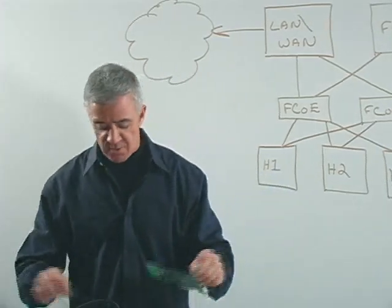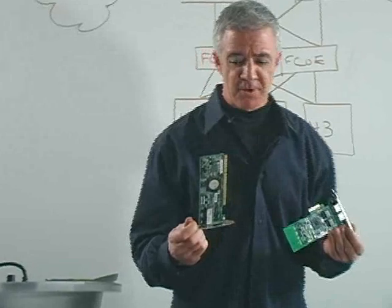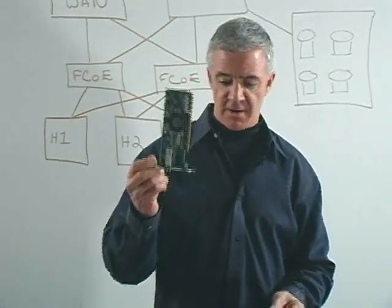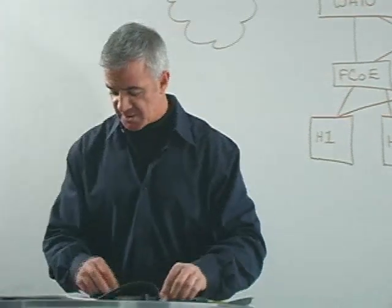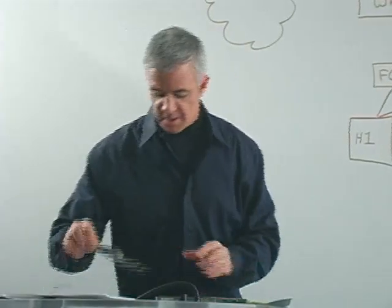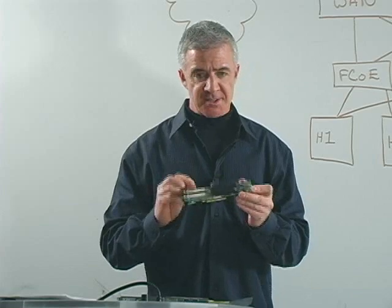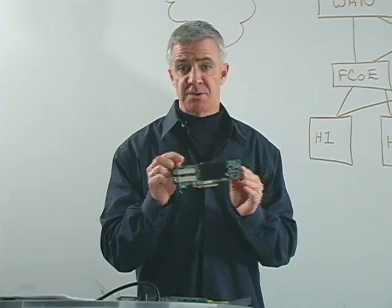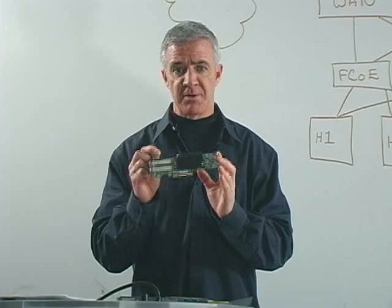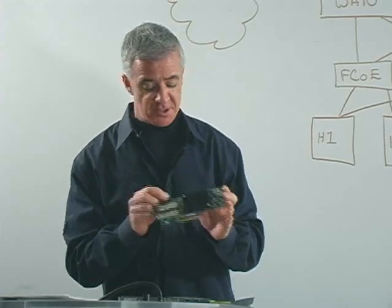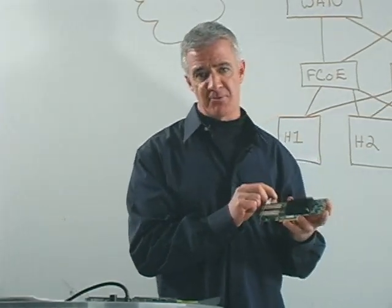Essentially what we're doing is going from installing two separate adapters — a NIC card and a Fiber Channel HBA — to physically installing one single converged network adapter into your server. This is the Emulex OCE-10100, a 10 gigabit enhanced Ethernet card capable of carrying FCoE or iSCSI traffic. In this case, we're concerned more about Fiber Channel over Ethernet.